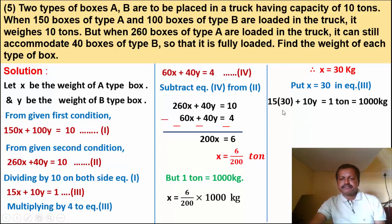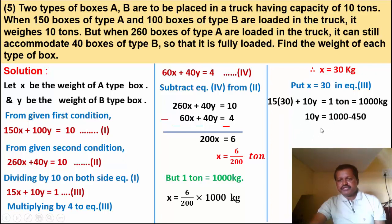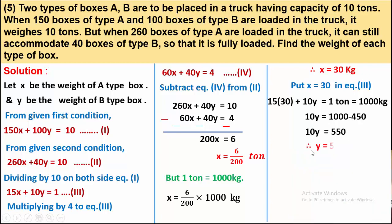Simplifying: 15 into 30 is 450; take 450 to the other side. So 10y equals 1000 minus 450 equals 550. Therefore y equals 55 kg.